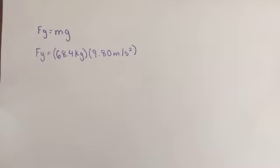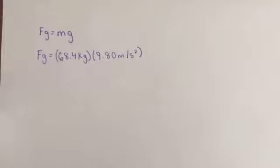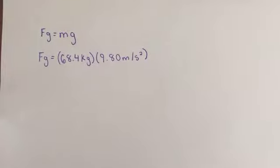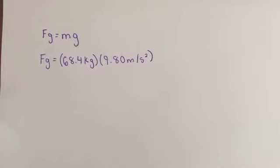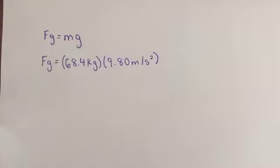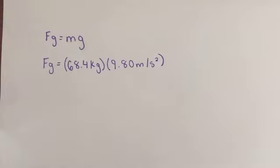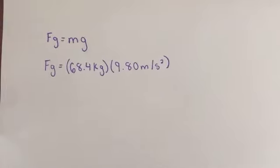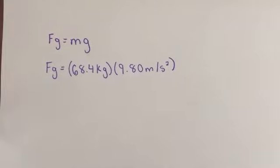For our mass, we took the average of our three masses, which came out to be 59.4 kilograms, and added it to the approximate mass of the chair, 9 kilograms, which we obtained through researching the ride. This makes Fg equal to 670.3 Newtons.